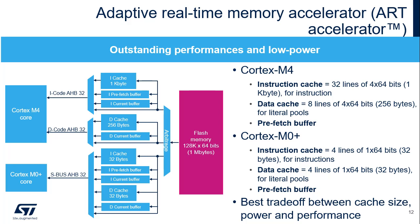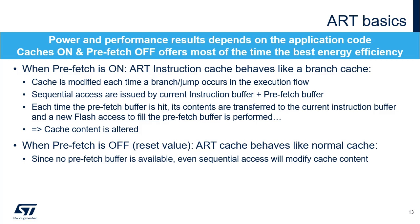The instruction cache behaves differently depending on whether or not the prefetch buffer is enabled. If the prefetch buffer is enabled, the ART instruction cache behaves like a branch cache; the cache is modified each time a branch or jump occurs in the execution flow. Sequential accesses are issued by the current instruction buffer and the prefetch buffer. If the prefetch buffer is disabled, the ART instruction cache behaves like a normal cache; even a sequential access will modify the cache content. The power and performance trade-off must be evaluated for each application to decide whether to enable or disable the prefetch buffer.